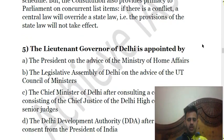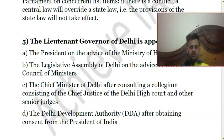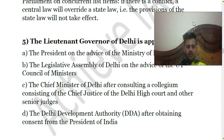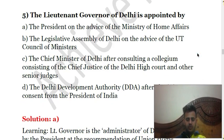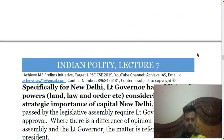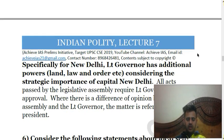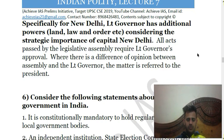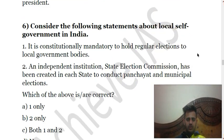The fifth question asks: the Lieutenant Governor of Delhi is appointed by — A) the President on the advice of the Ministry of Home Affairs; B) the Legislative Assembly of Delhi on the advice of the Council of Ministers; C) the Chief Minister of Delhi after consulting a collegium consisting of the Chief Justice of the Delhi High Court and other senior judges; D) the Delhi Development Authority after obtaining consent from the President. The Lieutenant Governor of Delhi is appointed by the President on the recommendation of and after consulting the Ministry of Home Affairs. The answer is A. Due to the strategic importance of New Delhi, the Lieutenant Governor has additional powers on subjects like land, law and order, etc. In case of a difference of opinion between the assembly and the Lieutenant Governor, the matter is referred to the President.